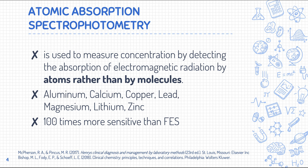First and foremost, what is atomic absorption spectrophotometry? AAS is used to measure concentration by detecting the absorption of electromagnetic radiation by atoms rather than molecules. What we are talking about now is no longer molecules — that is the job of spectrophotometry. Now what we are measuring is the absorption of your atoms, so AAS and spectrophotometry are two different instruments.